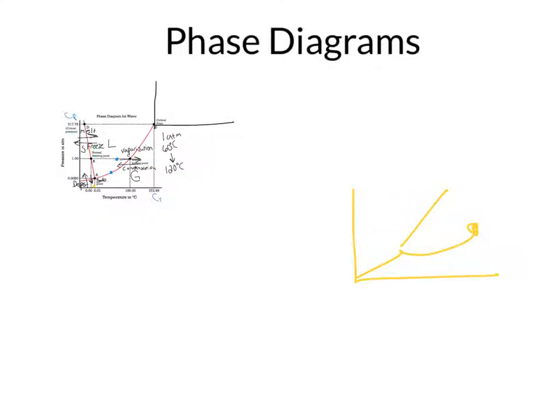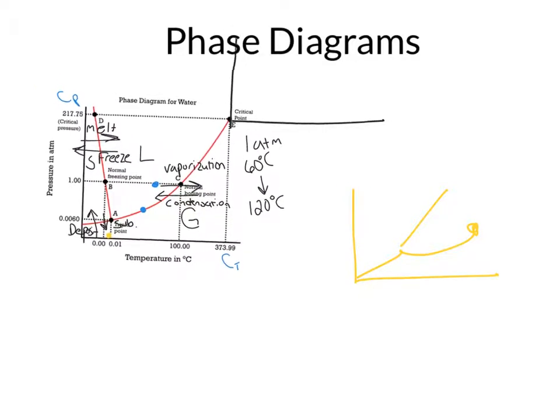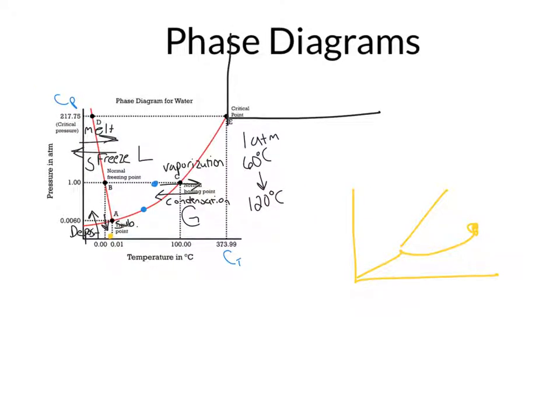And if we look back at the other phase diagram that we had right here, if I end up, if I apply pressure and it goes into this phase, the liquid is the most dense, and you notice this line has a negative slope to it. So if this line's negative slope, then my most dense phase is the liquid. If it's a positive slope, my most dense phase is a solid here.